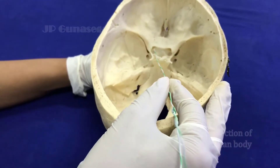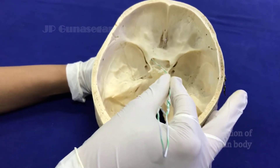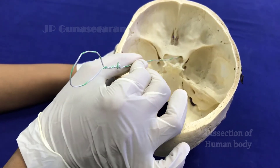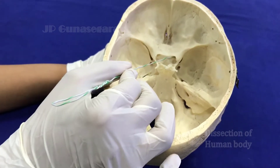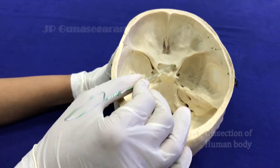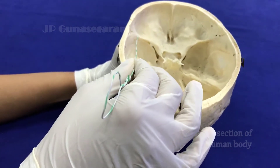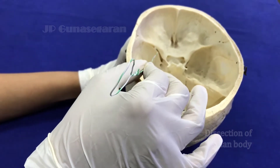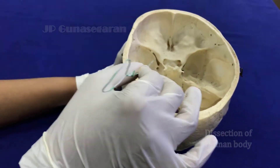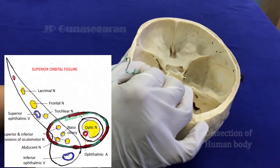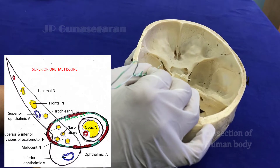On either side of sulcus chiasmaticus, we have the optic canal that transmits the optic nerve and ophthalmic artery. Between the greater wing and lesser wing of sphenoid is a narrow fissure, which is called the superior orbital fissure.